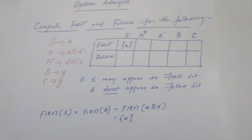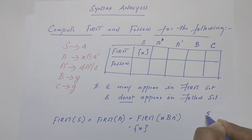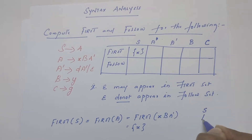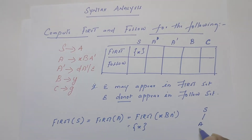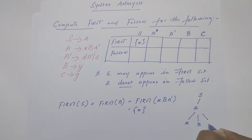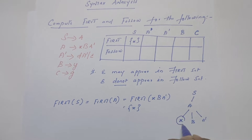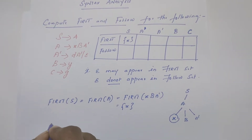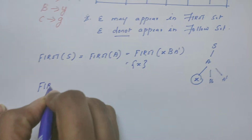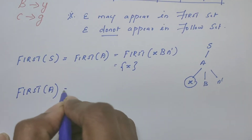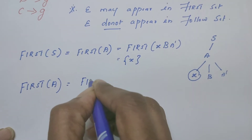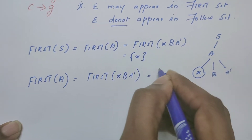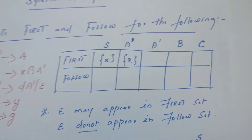Logically, you can understand it this way. If you try to draw a parse tree from S, which leads to the derivation of the string, it goes like this: S can be replaced by A, A can be further replaced by XBA dash. The very first terminal we obtain goes to the first set of the symbol. Next, we compute first of A. First of A is nothing but first of XBA dash, which is nothing but X. So first of A is X.